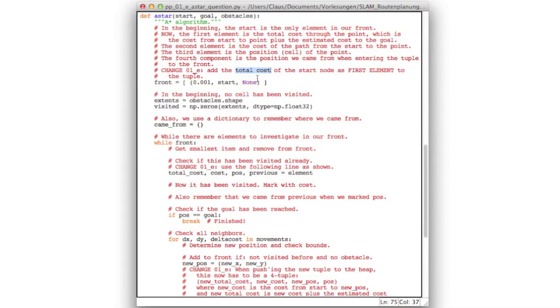So that is the cost from the start to the node plus the estimate from the node to the goal. And when entering the start node, this total cost is of course the distance between the start and the goal node. So the next change is here,